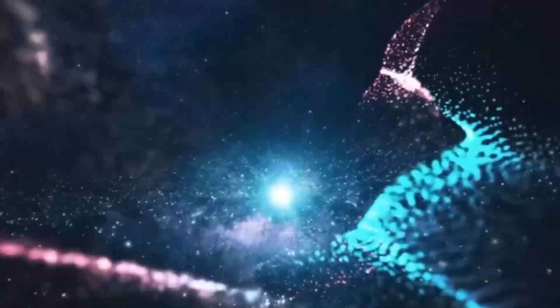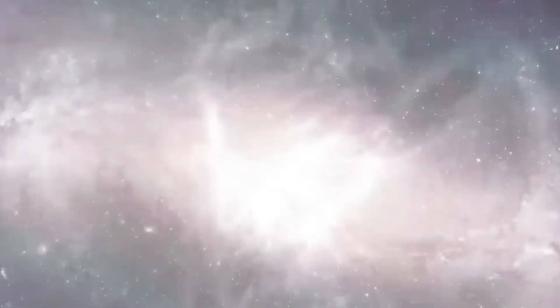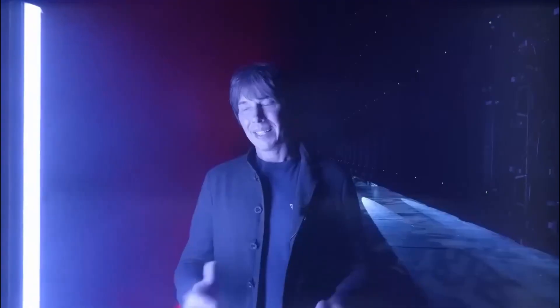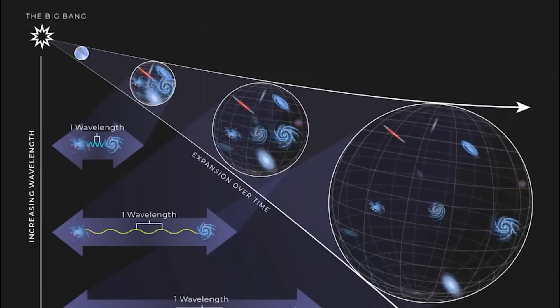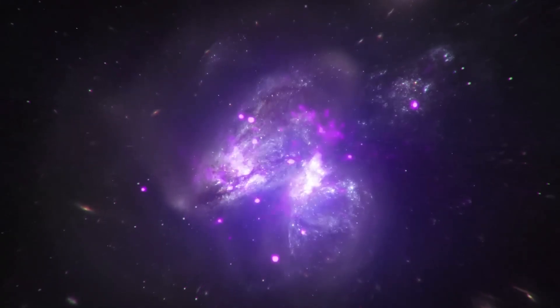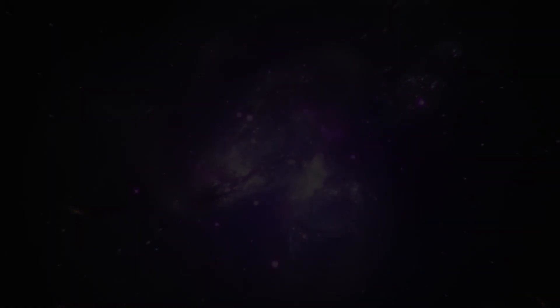The universe is filled with energy fields that interact to form everything we see. Quantum field theory, one of the most accurate theories in physics, describes the universe as being made of energy fields that permeate space and interact, creating everything we observe. These fields are constantly moving due to quantum fluctuations. And even in their lowest state, known as the vacuum state, fields remain active. Virtual particles continuously borrow energy from the vacuum, briefly appear, and then disappear.